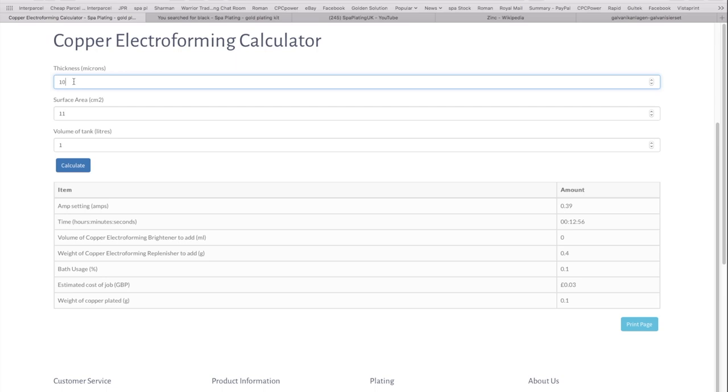You can change it. Let's say 100 microns, you can see the amp setting is the same, the only thing changing is the time. But we plated it about 50 microns, and you can see 0.39, one hour just over an hour.